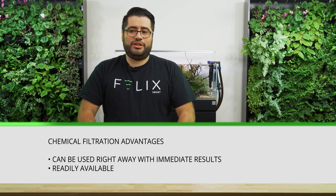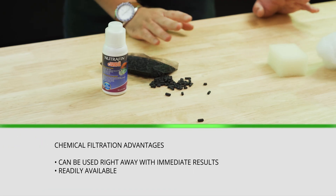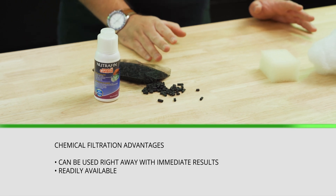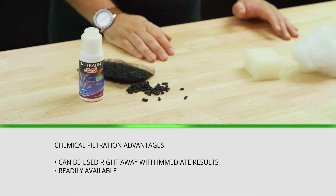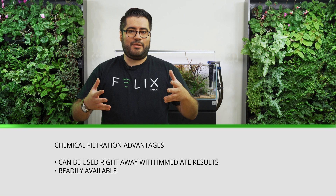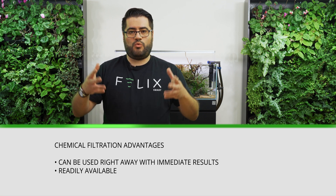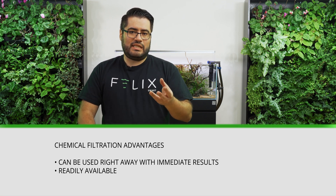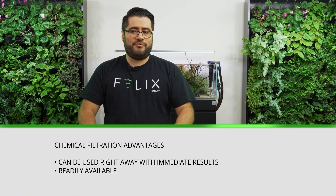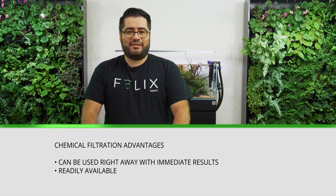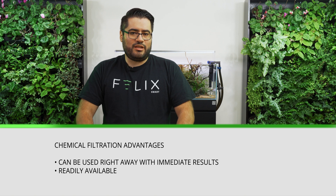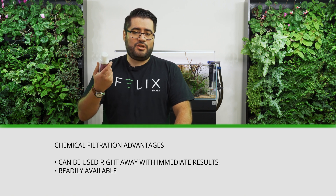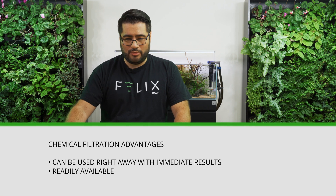The advantages of chemical filtration are that they can be used immediately with visible results. For example, as you use activated charcoal or carbon, you will slowly over time start seeing the brownness of your water disappear, so you can visibly see that the material is actually working. Another advantage is that this is generally readily available at almost all pet stores — some additives can even be found in grocery stores.